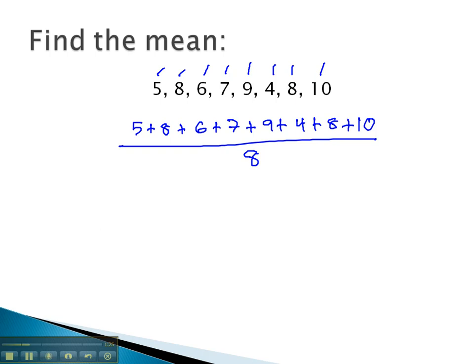We'll use a calculator to make the addition a bit easier to add these numbers together. When we add up these numbers, we get 57. Be very careful on your calculators to add the numbers first and get the total by hitting equals before you hit the divide by 8 in a separate step.